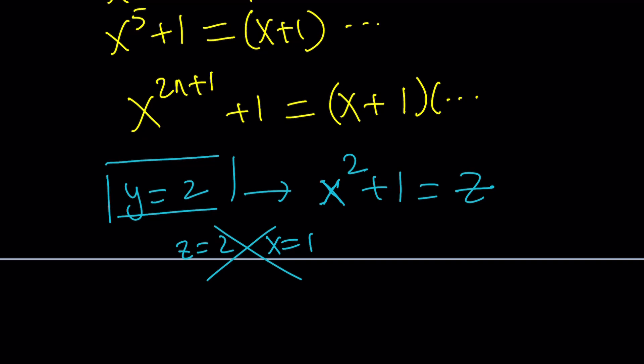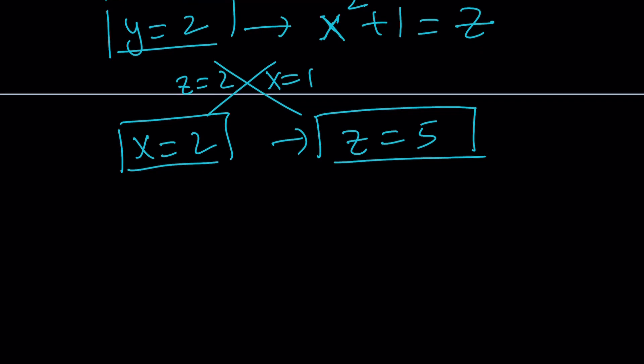Which means X needs to be even. Okay, great. If X is even and X is a prime, so X needs to be 2 as well. And then from here, we get Z equals 5. And that basically concludes the solution. So our XYZ values are going to be 2, 2, and 5.